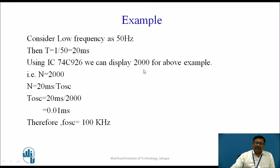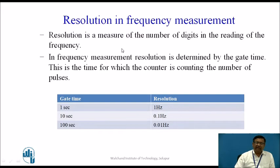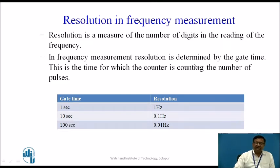This count will vary if the input frequency varies. So this way we get a time period measurement scheme. Now, resolution in frequency measurement: resolution is a measure of the number of digits in the reading. In frequency measurement, resolution is determined by the gate time. In the previous video, we saw that this gate time can be adjusted for changing the resolution. For example, if gate time is 1 second, then resolution will be 1 hertz.